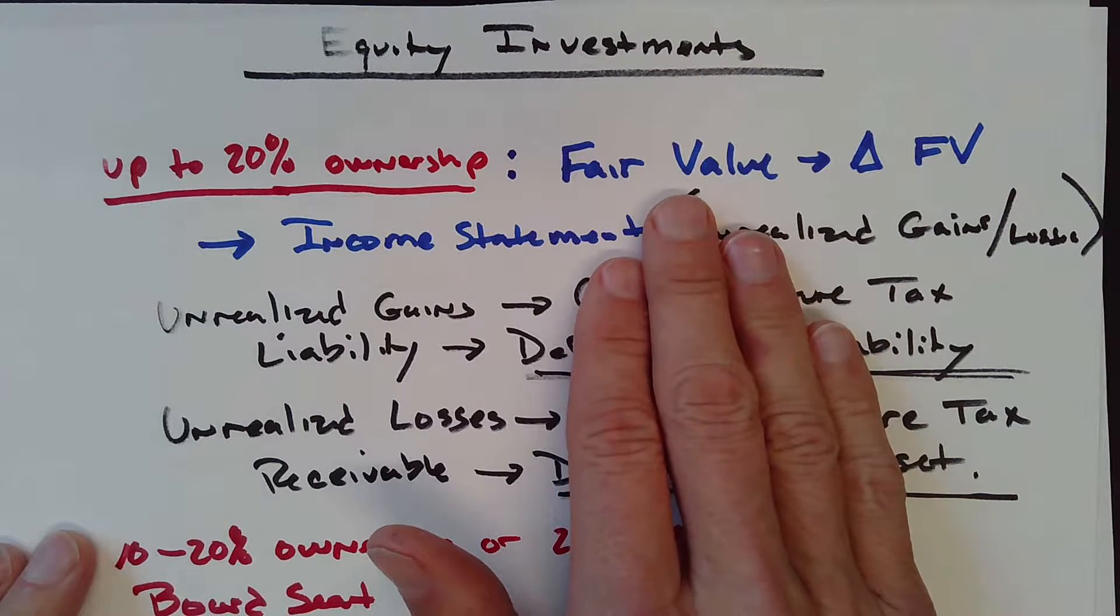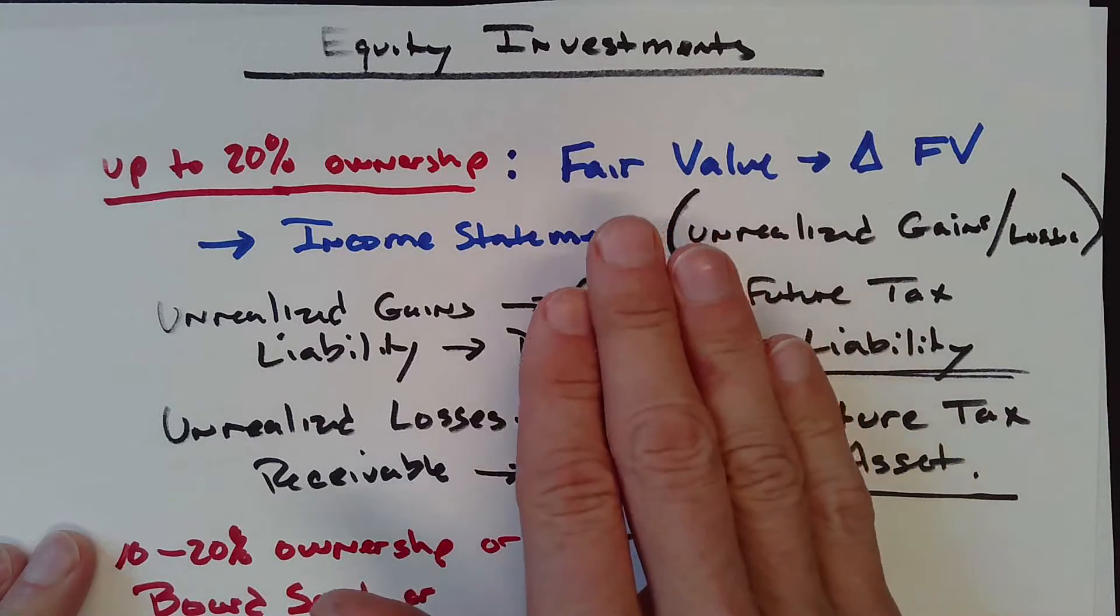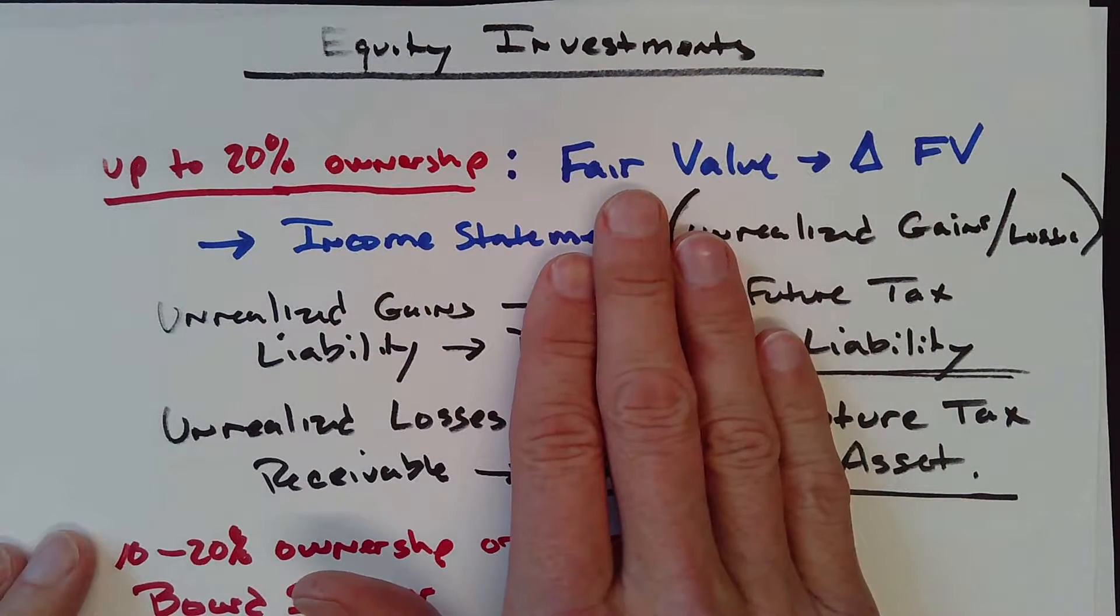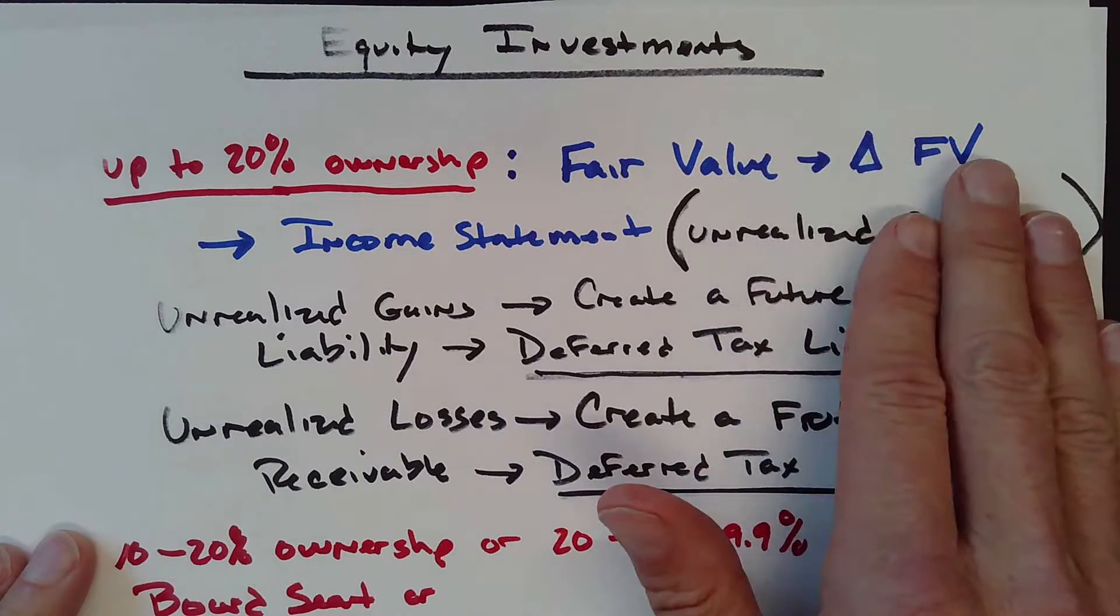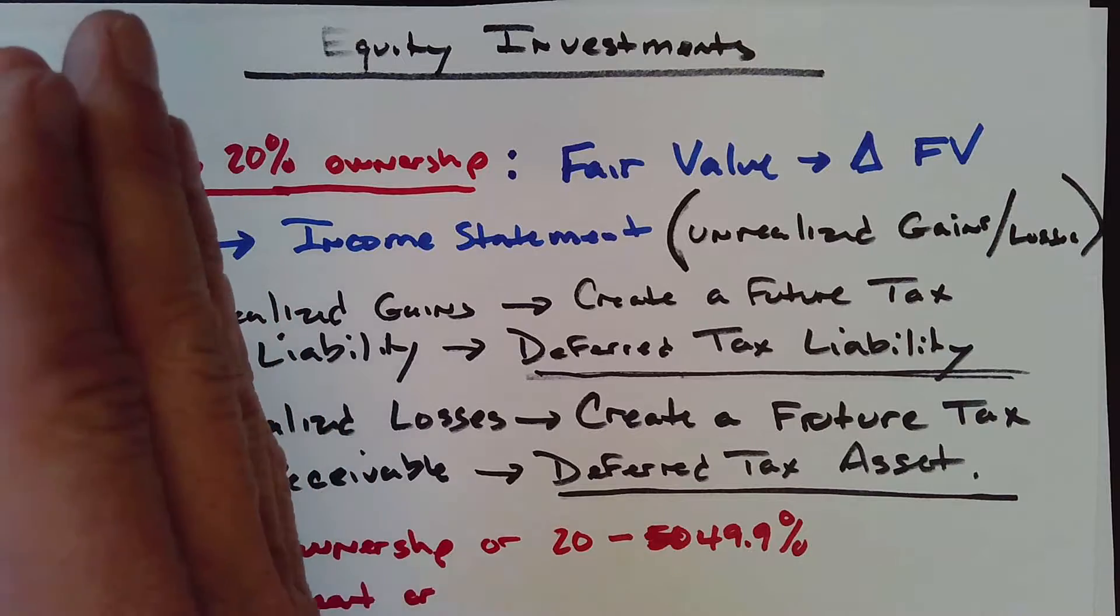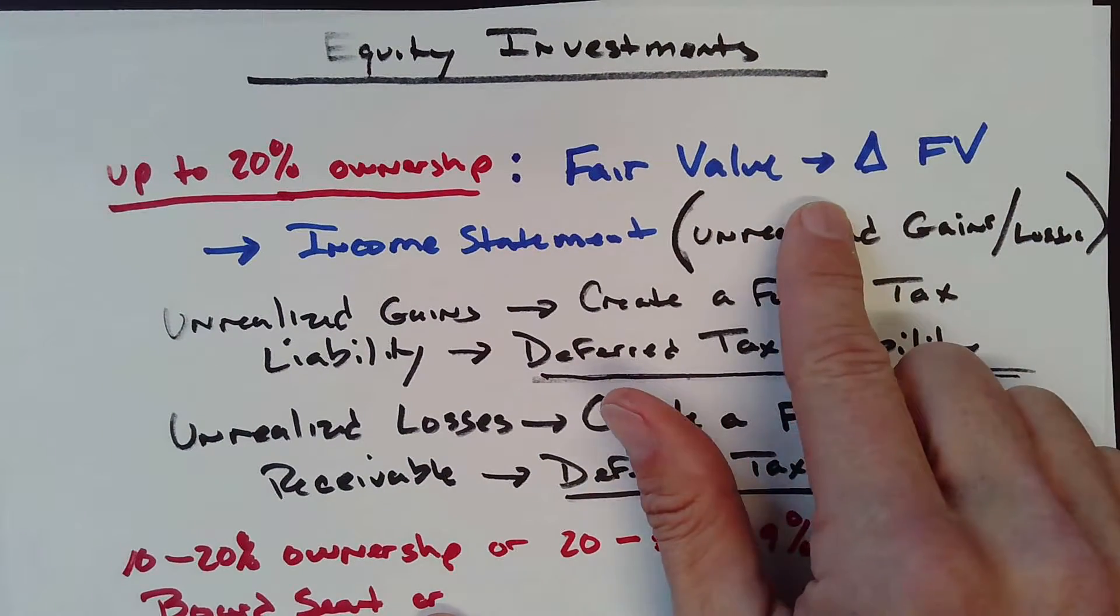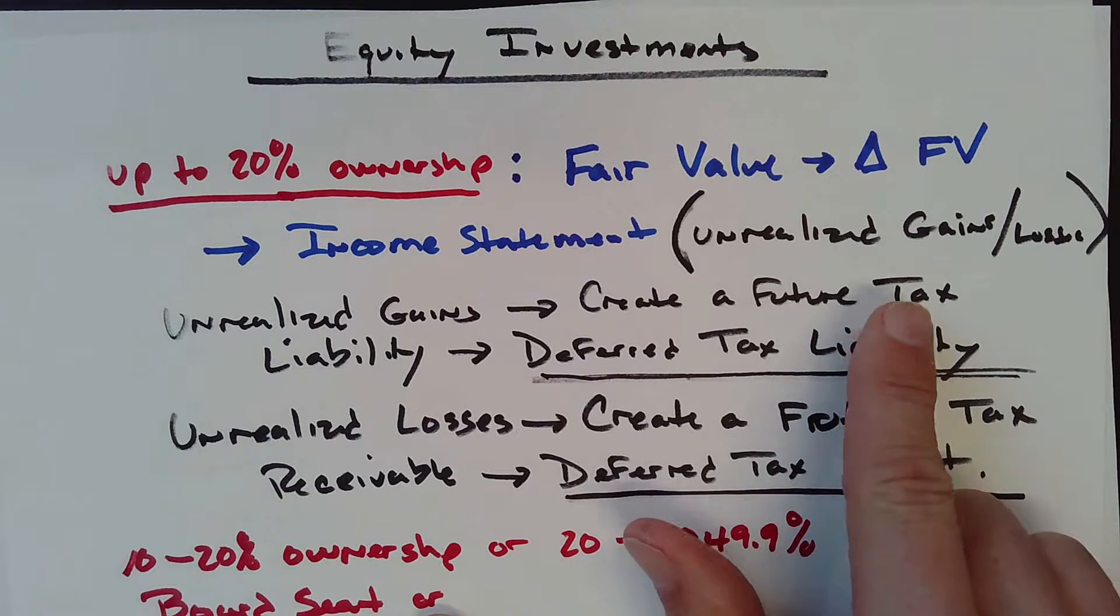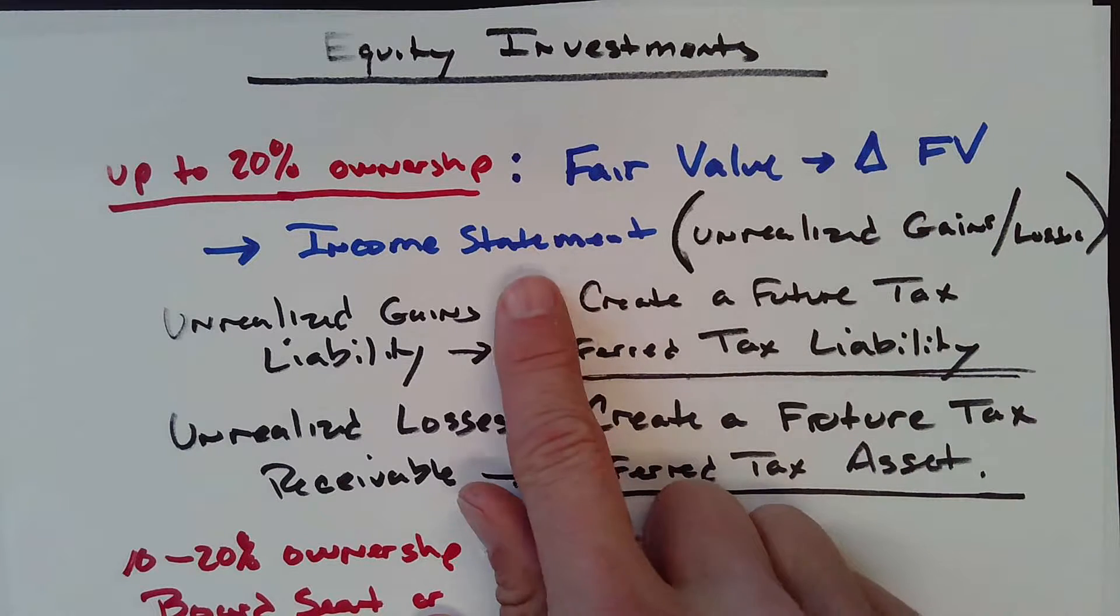Then your asset is at fair value, so you make changes in the asset up or down depending on the fair value, and those changes go to the income statement. If it went up from last year to this year, that change is an unrealized gain. If it goes down, it's an unrealized loss.